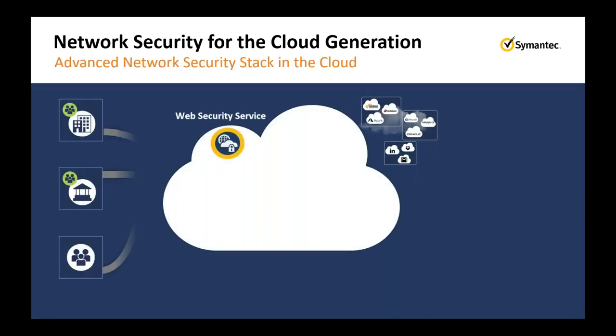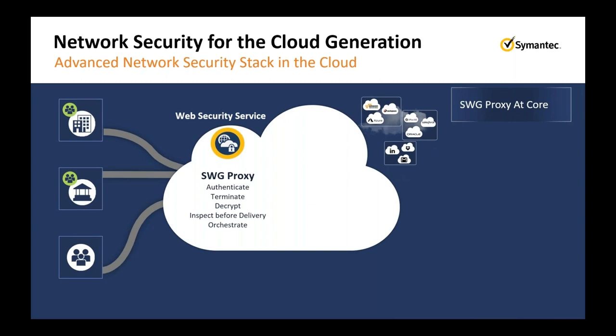Reviewing the capabilities of WSS: the web security service is a secure web gateway proxy at its heart — the ProxySG technology from the BlueCoat acquisition, which has been in the magic quadrant for over a decade. With that secure web gateway, we can authenticate users, terminate traffic as a full proxy in the cloud, decrypt traffic, and SSL inspect that traffic before orchestrating it onto other capabilities within the web security service.